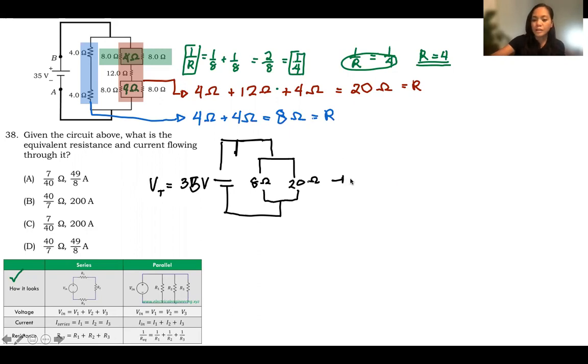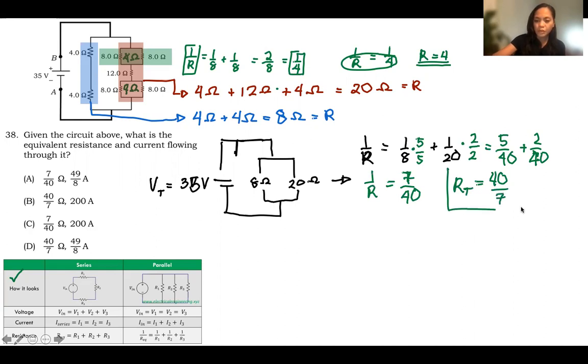Let's compute for this one. This is a parallel circuit. So 1 over R is 1 over 8 plus 1 over 20. Let's look for the LCD. The LCD there is 40. So it times 5 this times 5, it will times 2 this so that we will have 5 over 40 plus 2 over 40. So that would be our 1 over R. Our R is equal to 7 over 40. Or simply, our R total is 40 over 7. So this should be our answer.